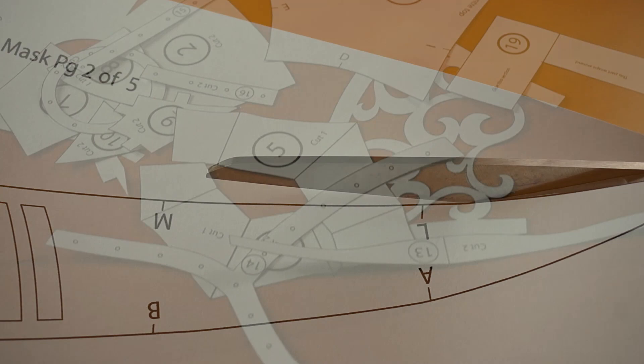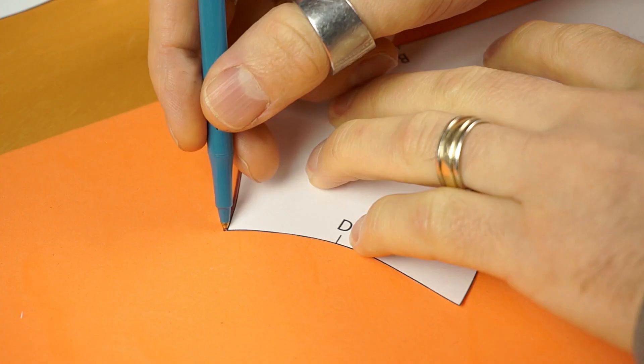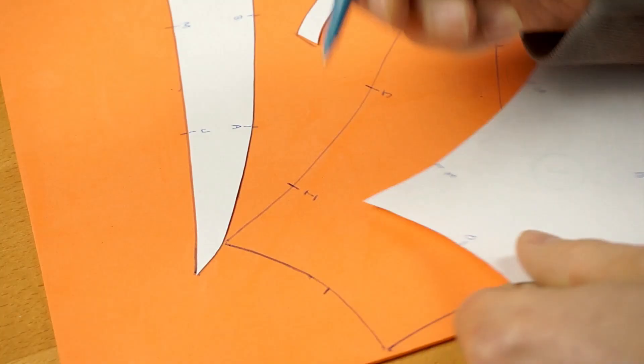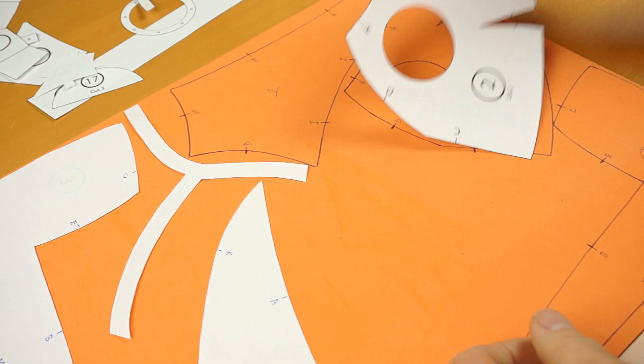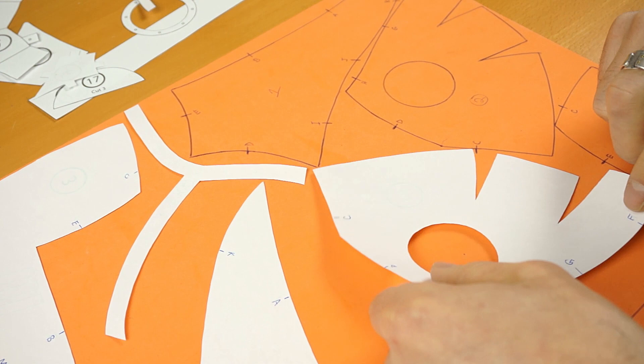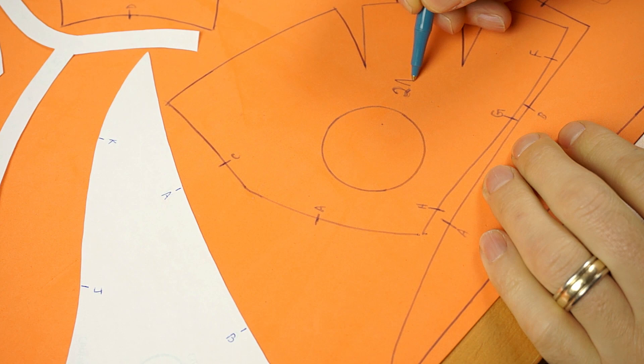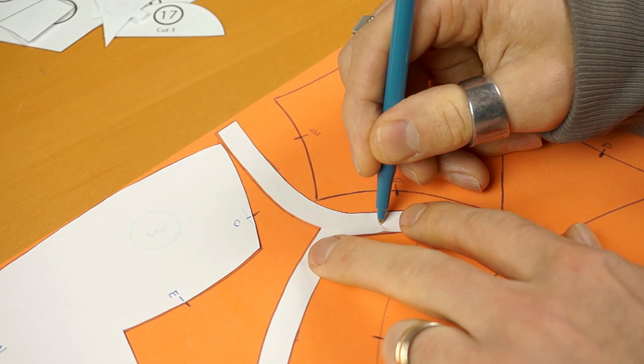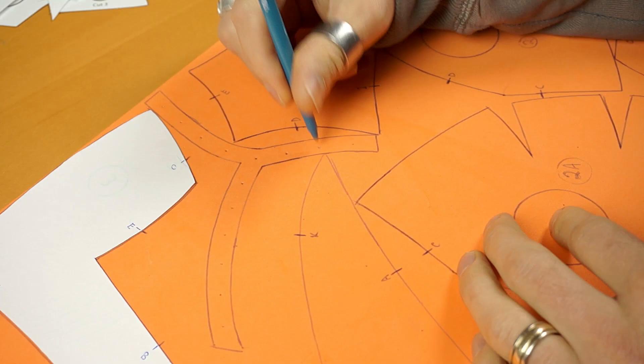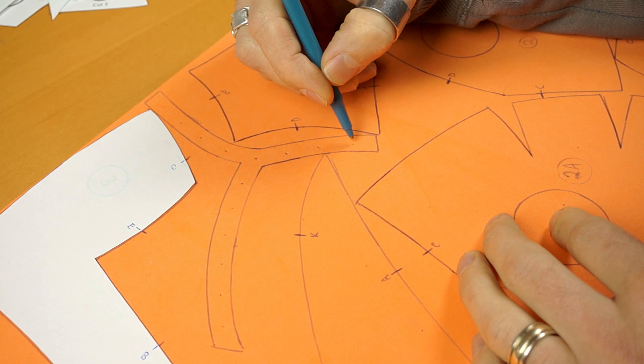So grab your scissors and cut out the pattern, which should leave you with a whole bunch of pieces. Take your pieces and carefully trace around them on the craft foam, making sure to mark the alignment points. When you need to cut two of a certain piece, flip it over before you trace it on the foam. I like to add an A after the number so I know which ones were the flipped over ones. You can mark the rivet spacing by pushing a pen through the paper on the dots.